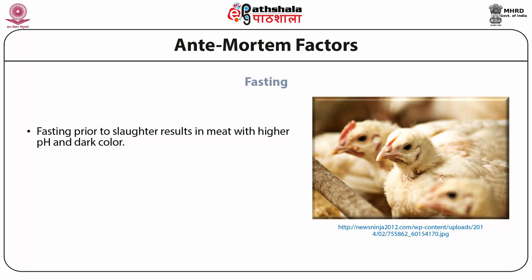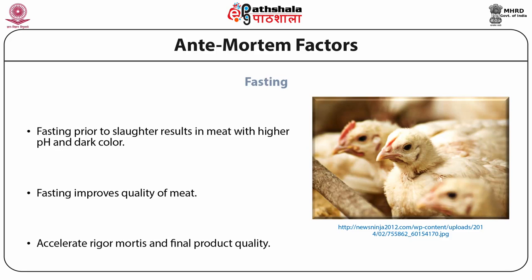Fasting prior to slaughter is known to deplete glycogen stores, resulting in meat with high ultimate pH and dark color. The effects of fasting on meat quality of poultry are particularly important because feed withdrawal periods of 8 to 12 hours before slaughtering are common and result in improved meat quality. This practice has been shown to accelerate rigor mortis and final product quality by decreasing the amount of glycogen available for energy production prior to the onset of rigor mortis. Feed withdrawal from birds prior to slaughter significantly reduces muscle energy stores that could be used during post-mortem metabolism.